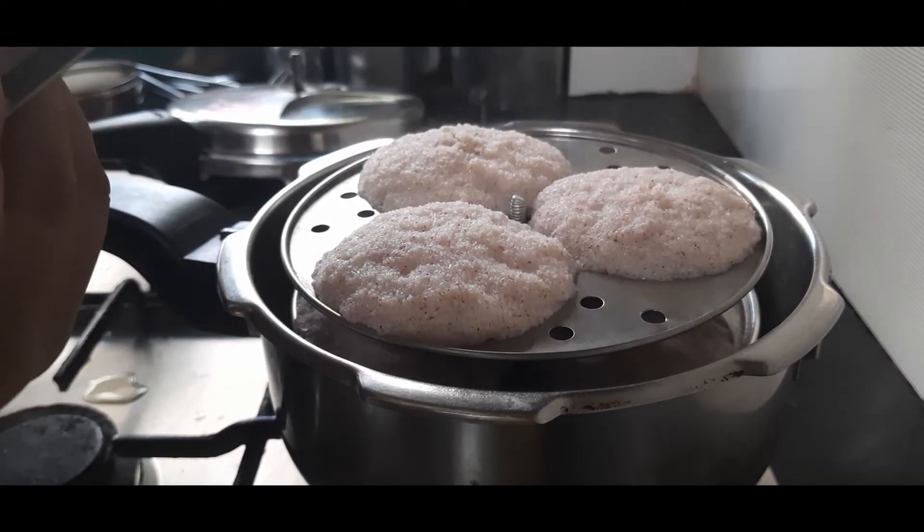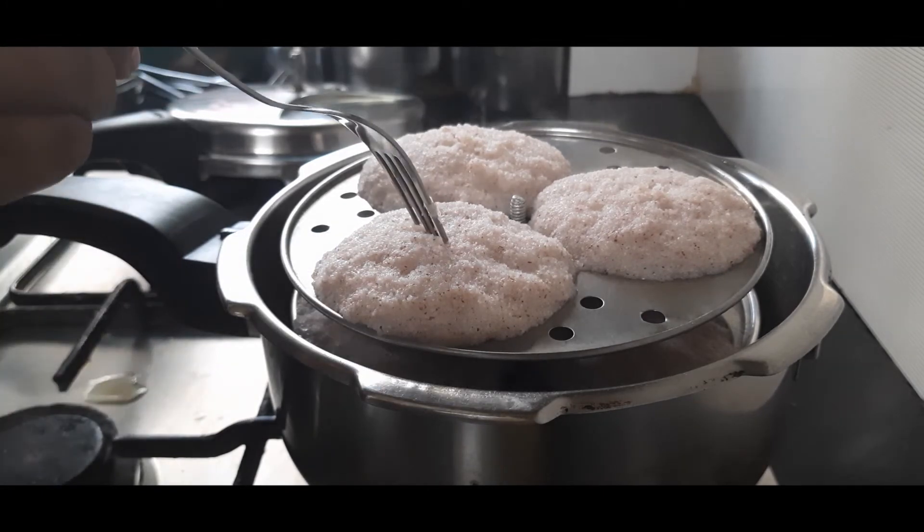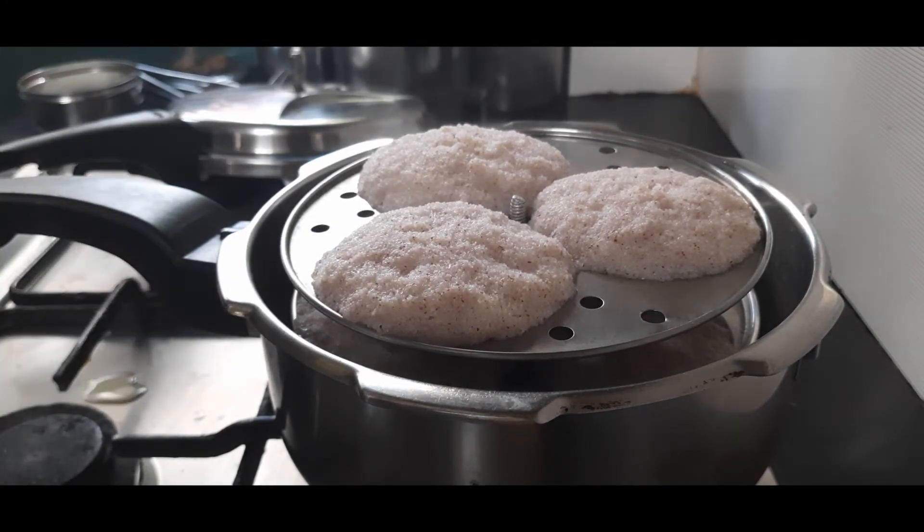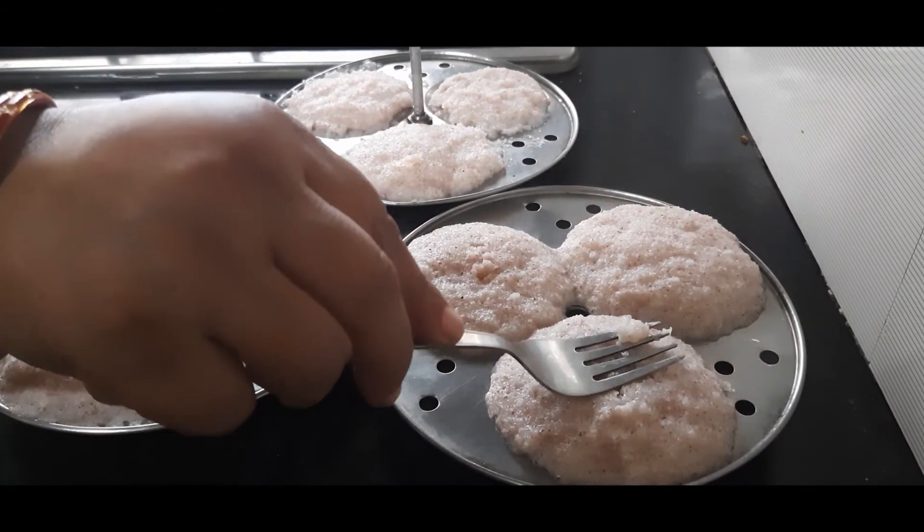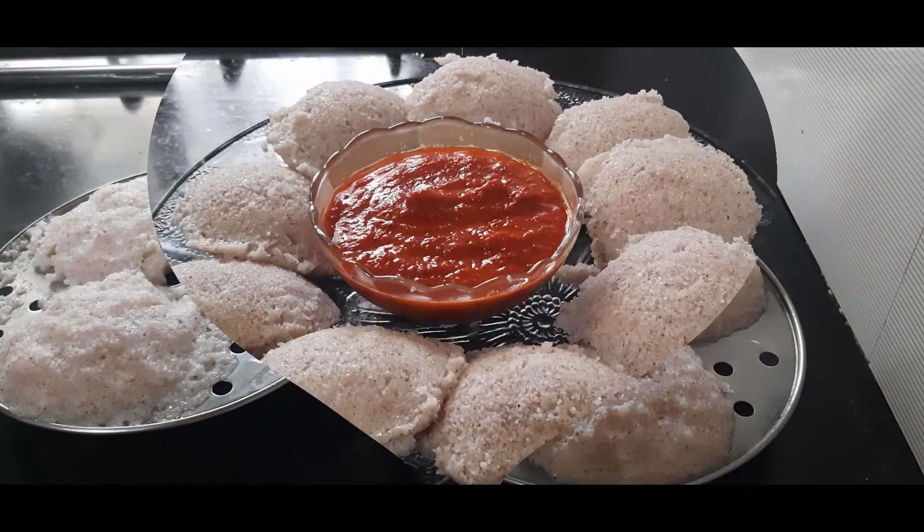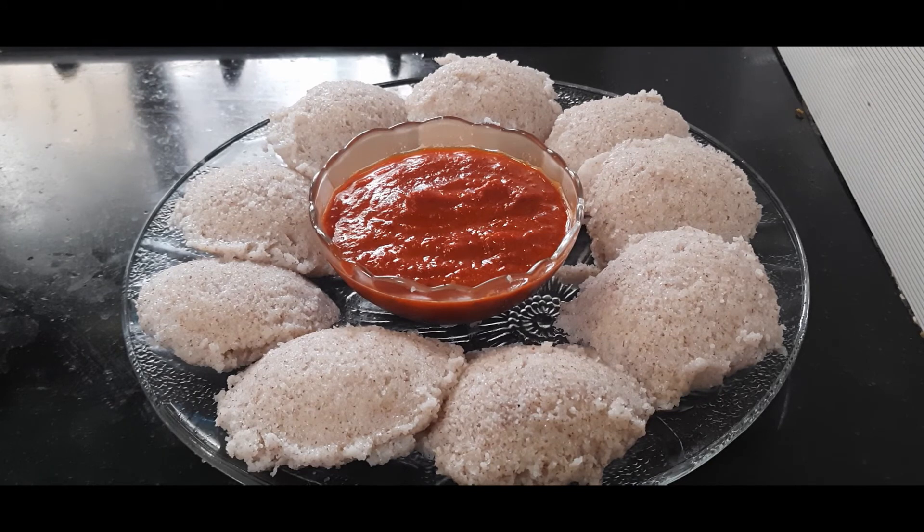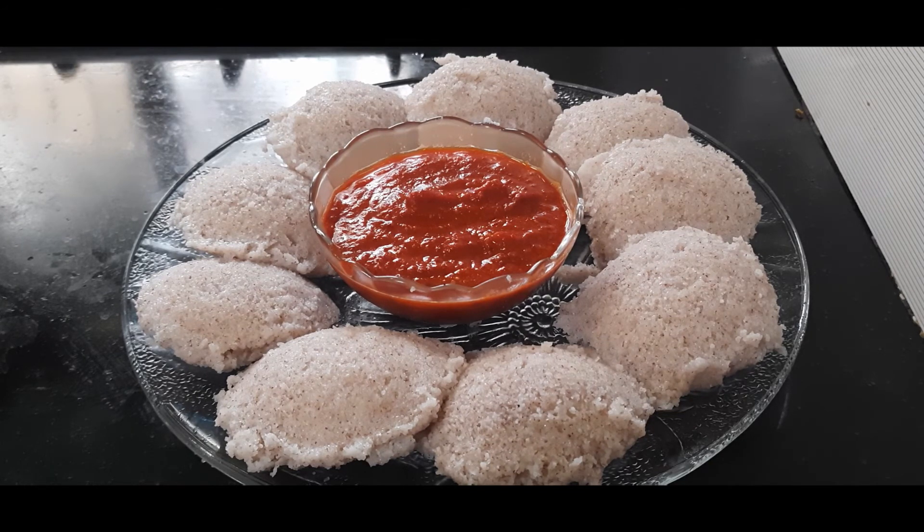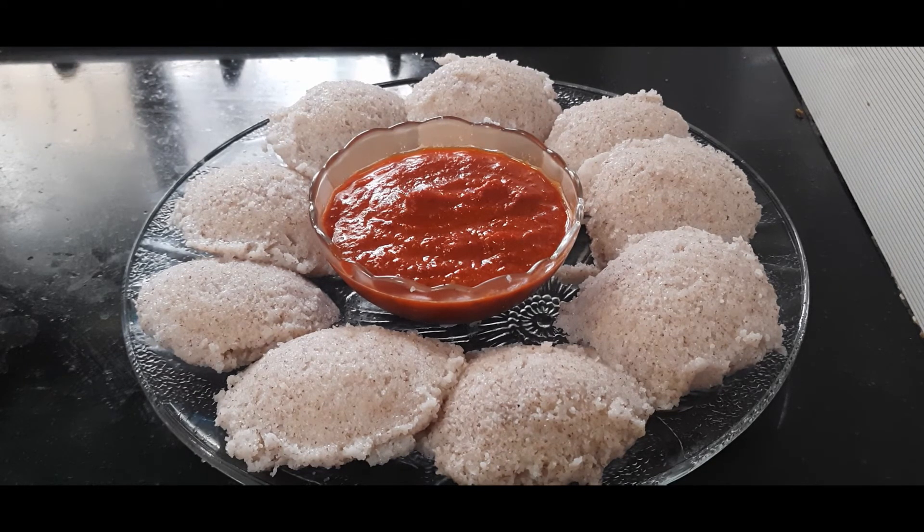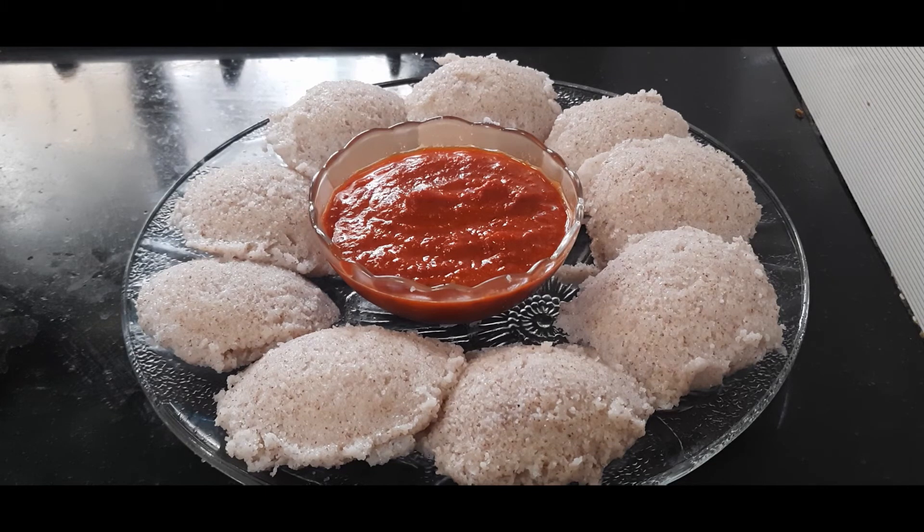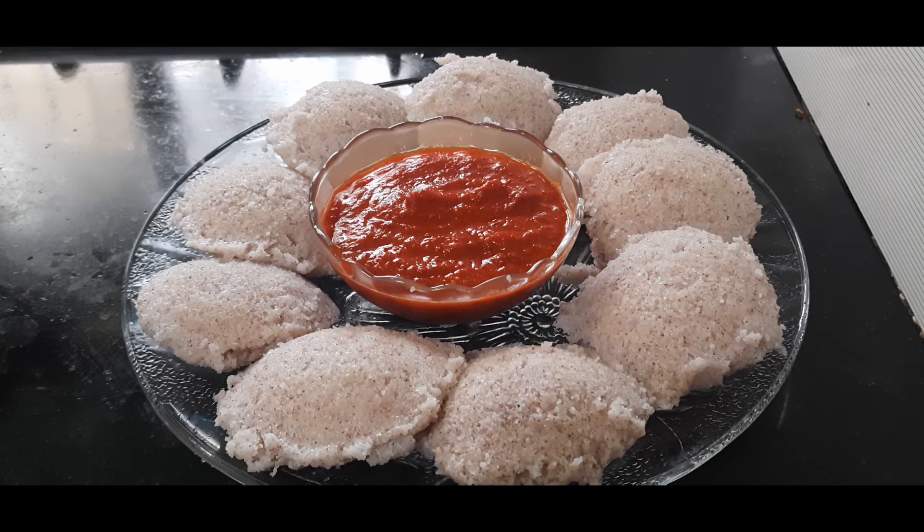What is coming is the steam from the idli because it is not yet set. Let us remove this. The soft and spongy idlis are ready. Let's plate them. The tasty and healthy soft idlis are ready, made with red rice rava. As I said, you can also use the ordinary rice rava if you don't have that, the common idli rava, and try this recipe. It's really wonderful. See you next time again. Bye.